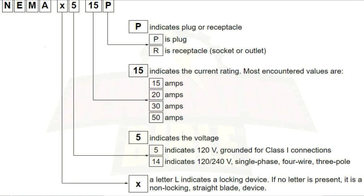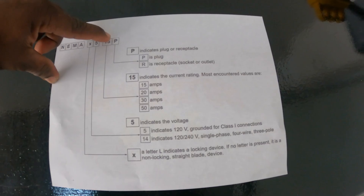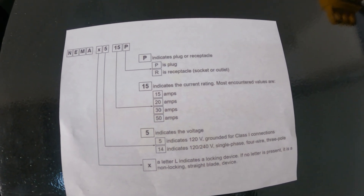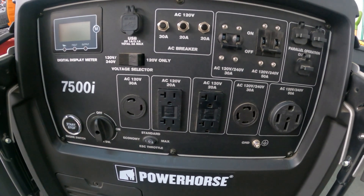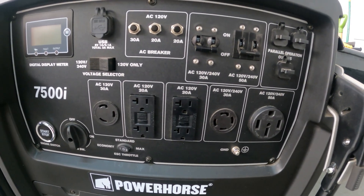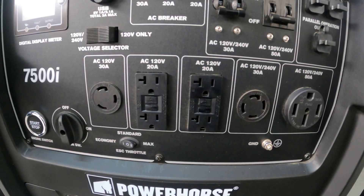Now let's explain the NEMA codes. The first letter indicates the type — locking, blade, or T-type. The number 5 indicates 120 volts; 14 indicates 240 volts. The next number is your amperage: 15, 20, 30, or 50 amps. The last letter — P or R — stands for plug or receptacle. That's the easy way to decode any NEMA name. You'll also commonly see GFCI protected outlets on generators.